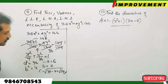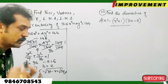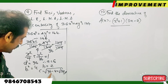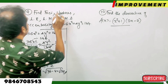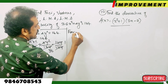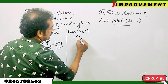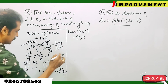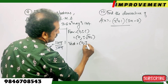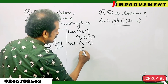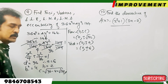Since the major axis is along the y-axis, foci are at (0, plus or minus c) equals (0, plus or minus root 32). Vertices are at (0, plus or minus a) equals (0, plus or minus 6).